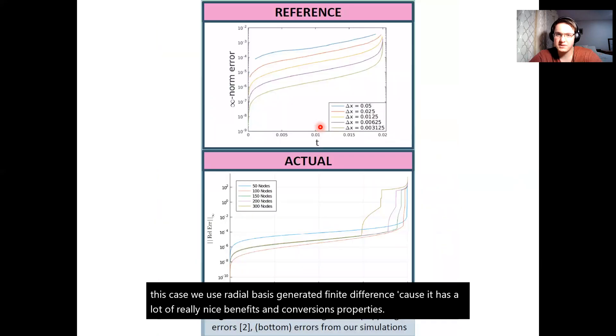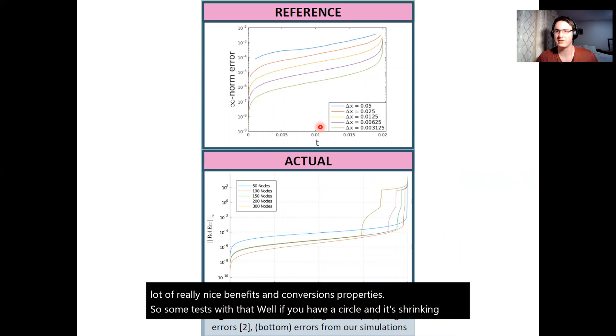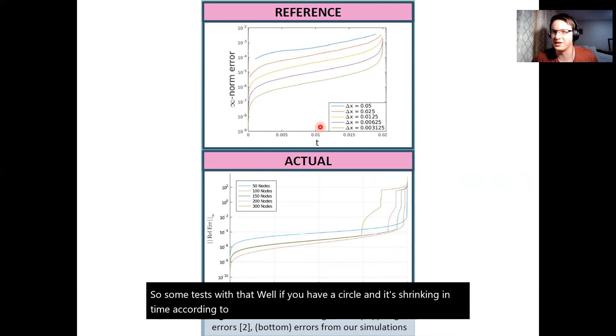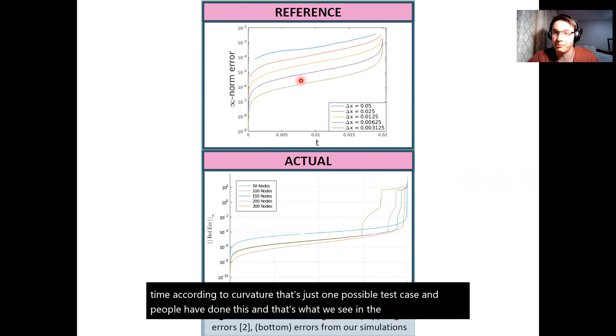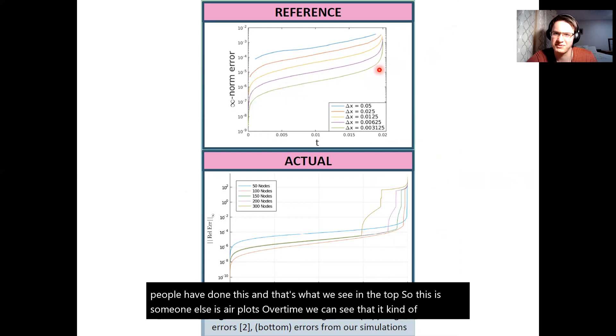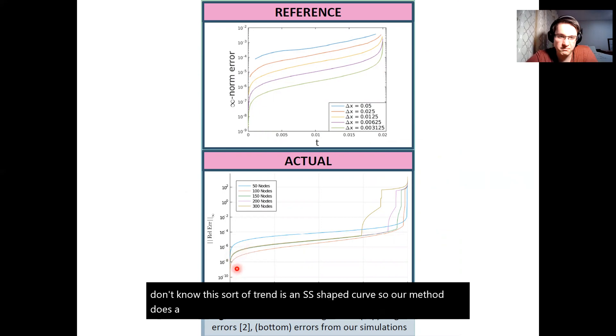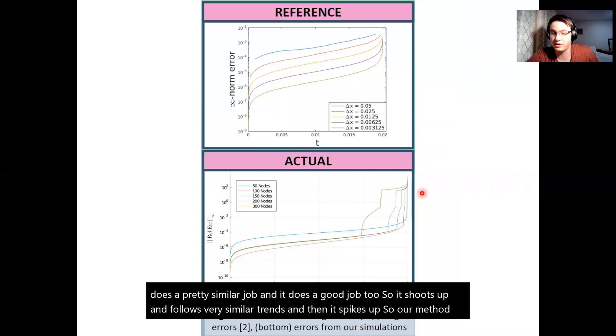So some tests with that. Well if you have a circle and it's shrinking in time according to curvature that's just one possible test case and people have done this and that's what we see in the top. So this is someone else's error plots over time. We can see that it kind of follows this sort of trend, an S shaped curve. So our method does a pretty similar job and it does a good job too. So it shoots up and follows very similar trends and then it spikes up. So our method is working in comparison to other people's methods.